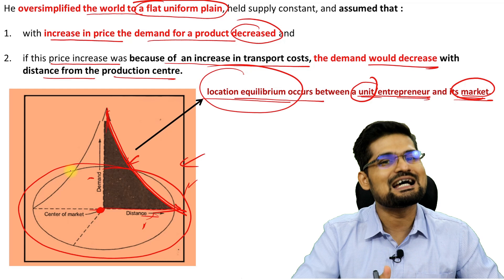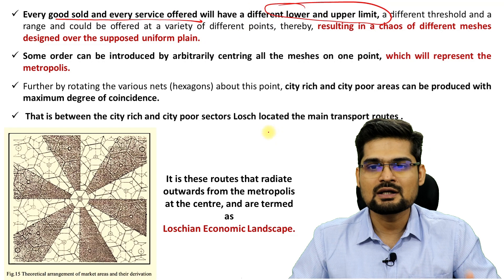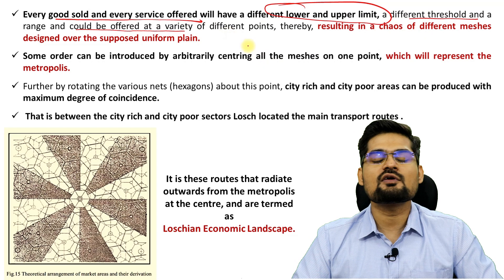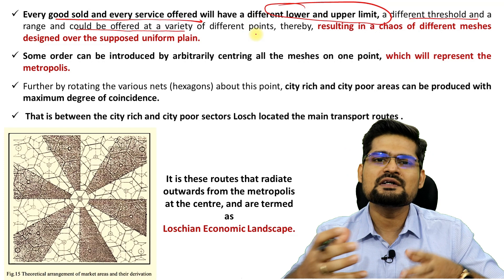Every good sold and every service offered will have a different lower and upper limit, resulting in variety. A different threshold and range could be offered for every product — it will not be the same as in Christaller's theory. That is the modification: for every product you will have a different range of good and threshold value, because they are unique with different upper and lower limits.